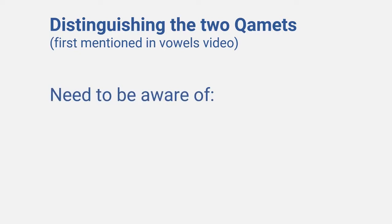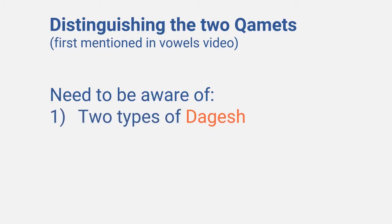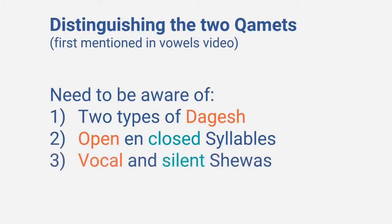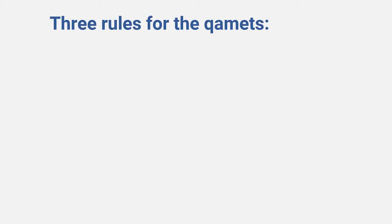You should be aware that there are two types of dagesh and what their function is, and you should also be able to distinguish between open syllables and closed syllables, and by implication you should be able to distinguish between the vocal and the silent shwahs. Once you have all of those fresh in your memory, you are ready to delve into the Kametz question. And there are only three things you need to remember.